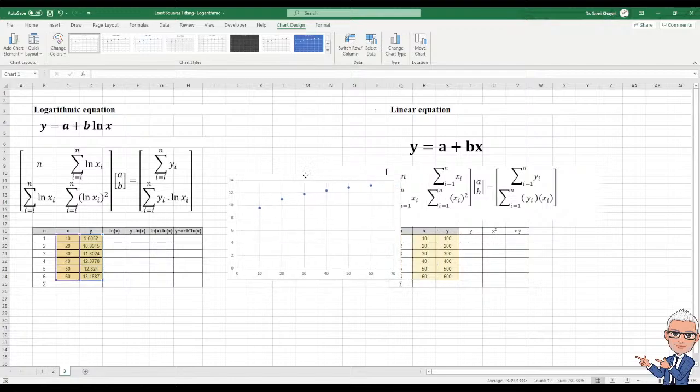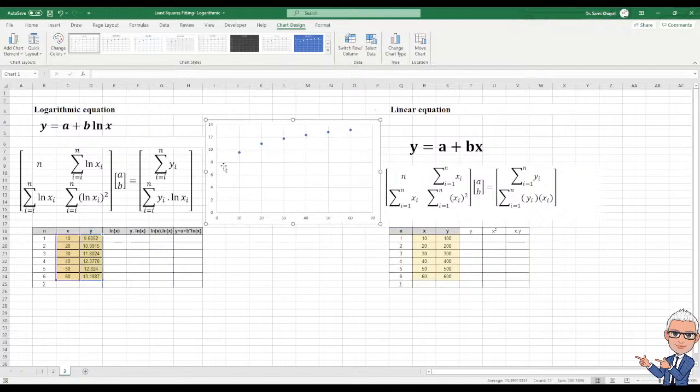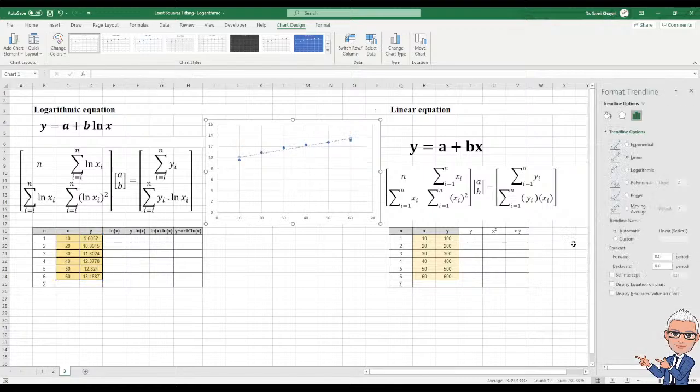It's similar to the one I just showed you. If you want to ask Excel to do it for you, point to any of these points, right click and you go to add the trendline. In the trendline, he suggests many ways by default linear, but no, you can see the linear is not well. We are using logarithmic.